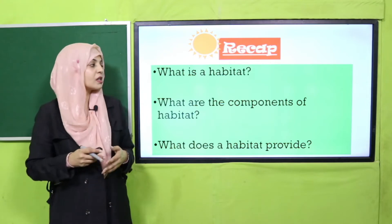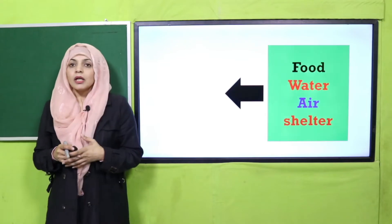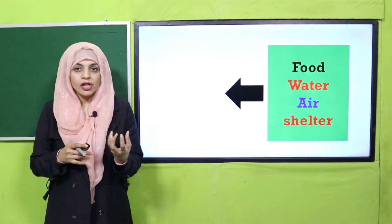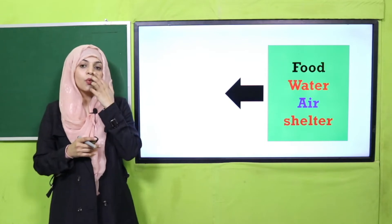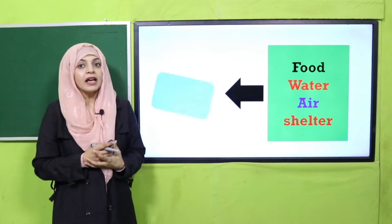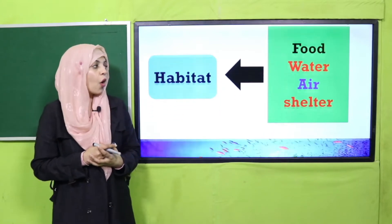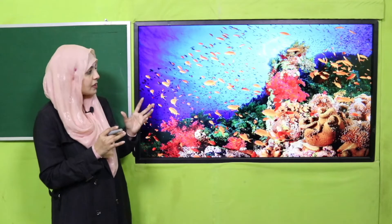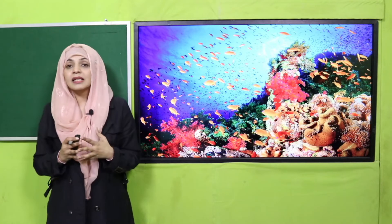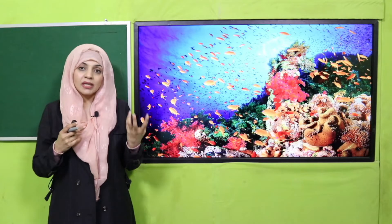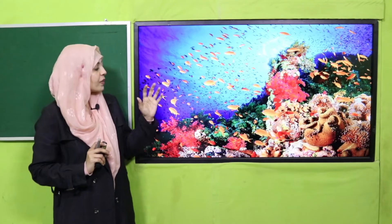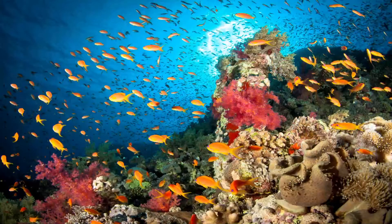Now we will move forward towards some revision and discussion. Food, water, air and shelter is provided in a habitat. Now on your screen you will see different habitats. You can see this is an underwater scene where there are many fish and some plants. This is an aquatic habitat. Underwater jo bhi habitat hota hai, usko aquatic habitat kehte hain because aqua means water. There are many underwater plants and fishes which live here.